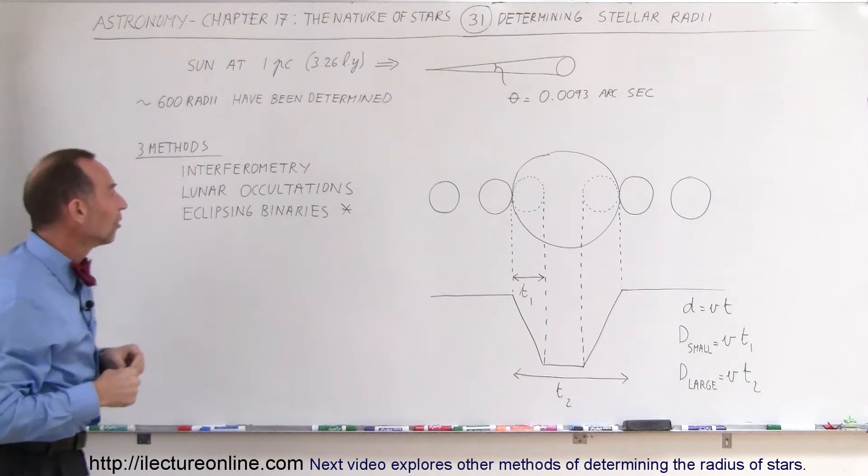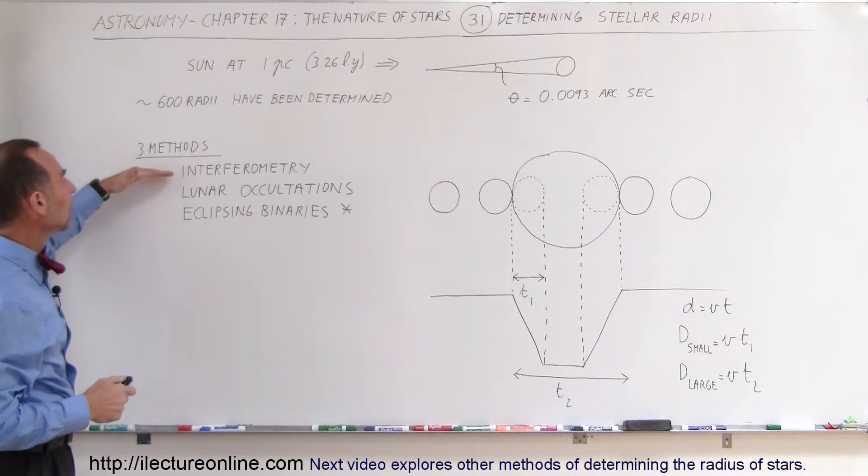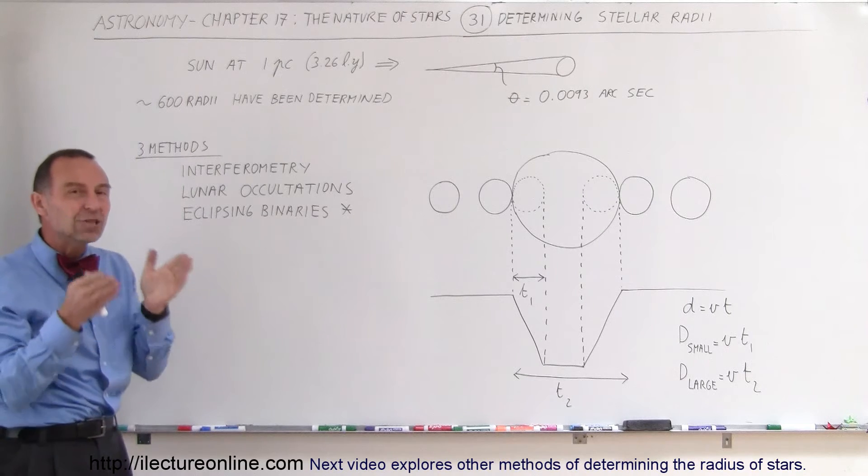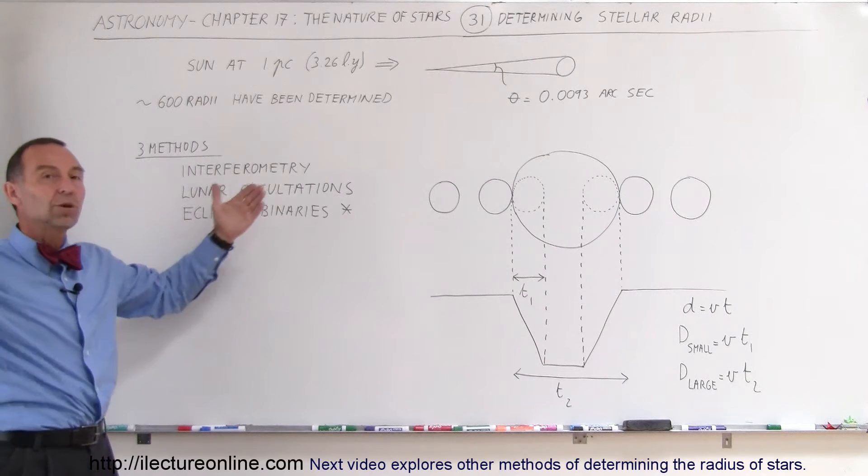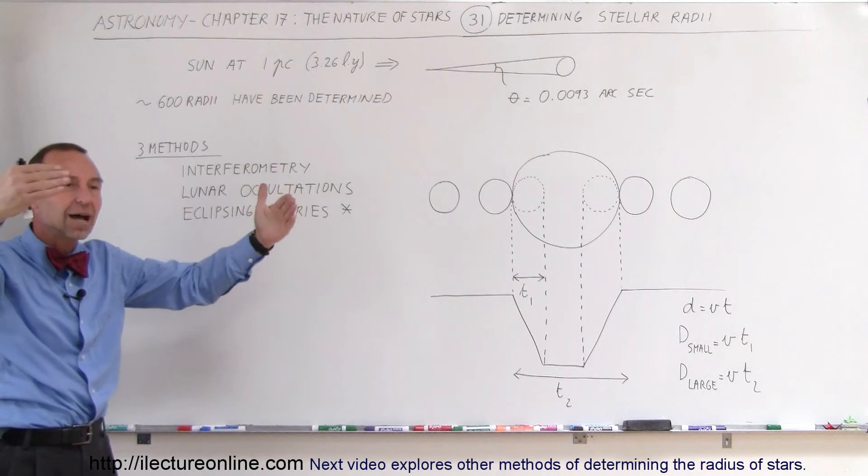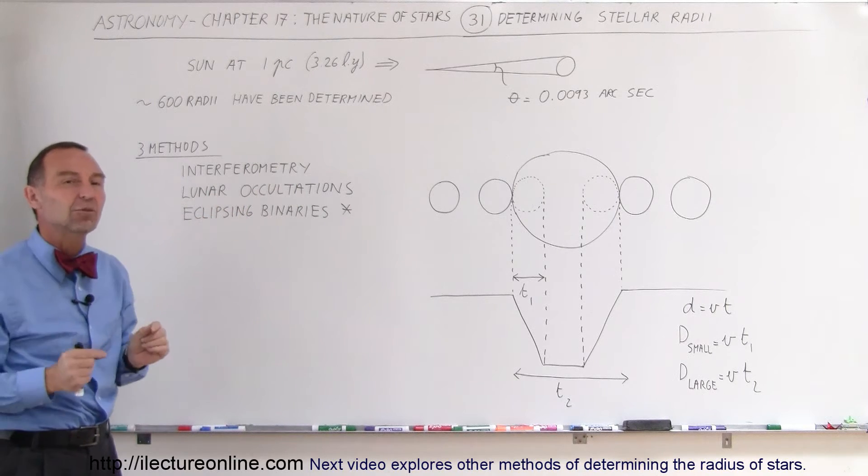Well, there's a number of methods. Three of the more common methods are what we call interferometry, making direct measurements like that, but with more than one telescope at the same time, so we can make as accurate a measurement as possible.